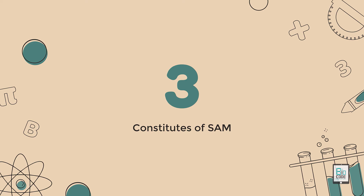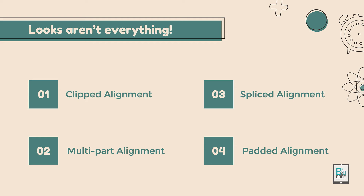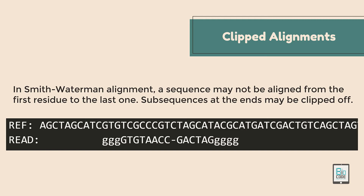SAM contains various types of alignments stored in a single file format: clipped alignment, spliced alignment, multi-part alignment, and padded alignment. In clipped alignments — as seen in the Smith-Waterman local alignment algorithm — only the matching sub-region of the sequence would normally be shown, with the rest clipped out.